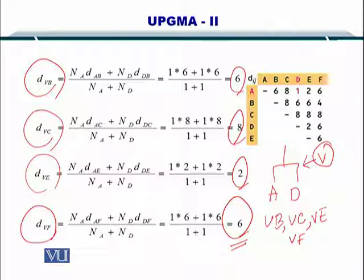You have to update this distance matrix such that you remove A and D from this matrix because they have been merged into V. So their place will be taken up by V. Let's see how it is done. Just remember: 6, 8, 2, and 6.